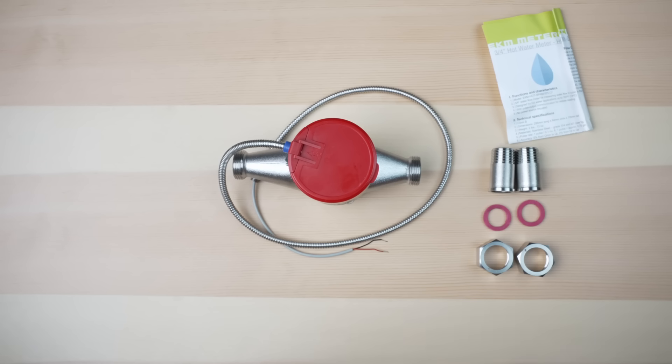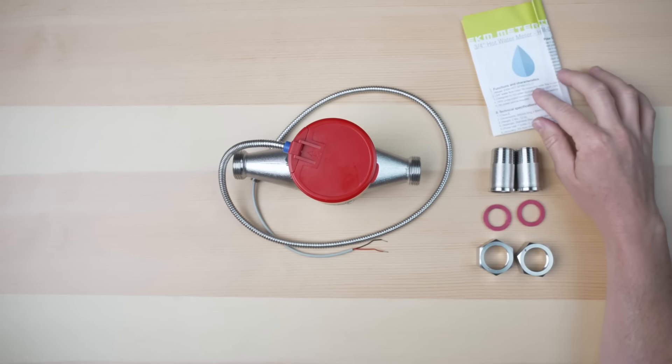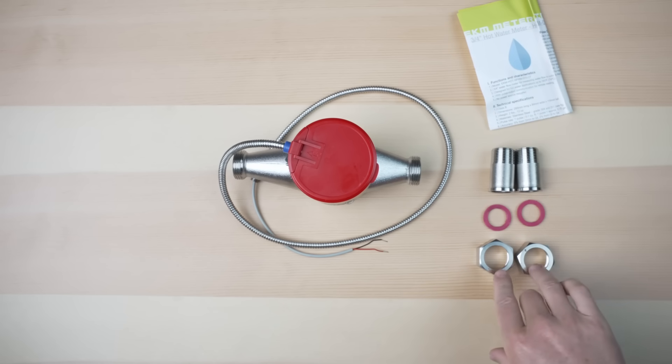So now that we've unboxed everything, you can see everything that's included with the hot water meter. There's two retention nuts, two gaskets, and two three-quarter inch NPT threaded fittings.